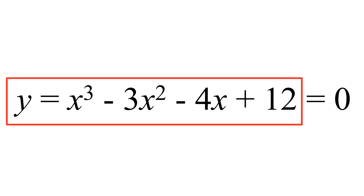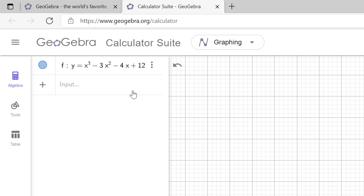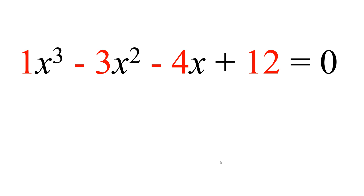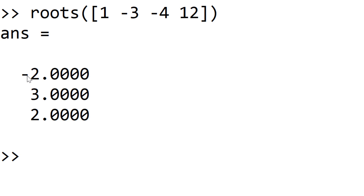Graphically, you can plot y equal to x cubed minus 3x squared minus 4x plus 12. In GeoGebra, type that equation and as you can see, you get a cubic curve with intersections at x equal to minus 2, x equal to 2, and x equal to 3 — which is what you expect. In Octave, collect the coefficients for each term: 1, minus 3, minus 4, and 12, and type roots([1 -3 -4 12]). You get three solutions: minus 2, 3, and 2.